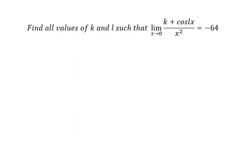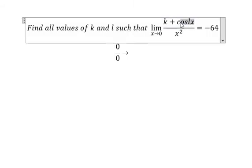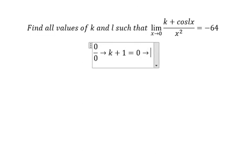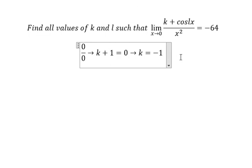We know that this one is about 0. If we put x approach to number 0 into cosine lx, you get about number 1. That means k+1 should equal to number 0, so k should be about negative number 1. Now we can use L'Hospital's rule.